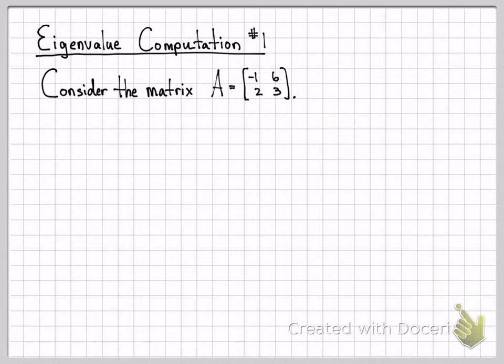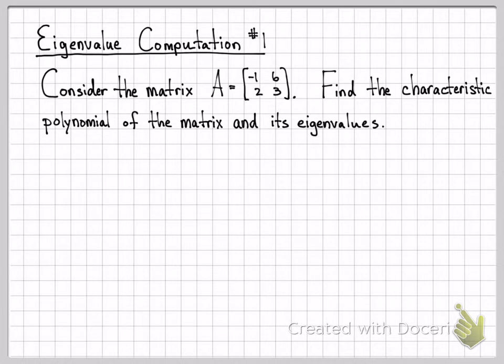Here's the matrix we're going to work with, it's just a two by two matrix, matrix A, and we are going to find two things. First we're going to find what we call the characteristic polynomial of the matrix, and then from the characteristic polynomial if we set that polynomial equal to zero, the roots of that polynomial give us the eigenvalues of the matrix. So those are the two key steps.